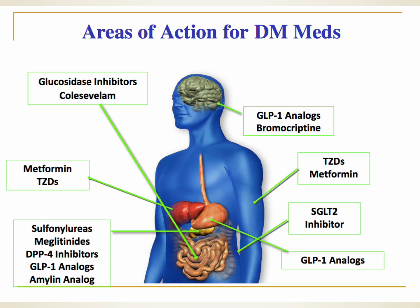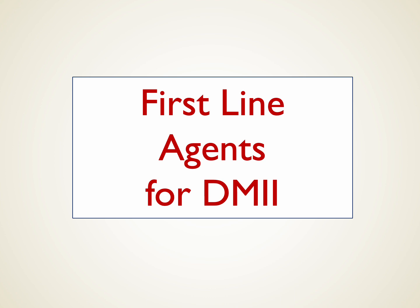There are a number of other agent categories — some first line, some more second line — based on data and different mechanisms. Let's differentiate the first-line agents first, then spend time on second-line agents that are not used as often anymore. Of the first-line agents, almost everyone has historically started on metformin.